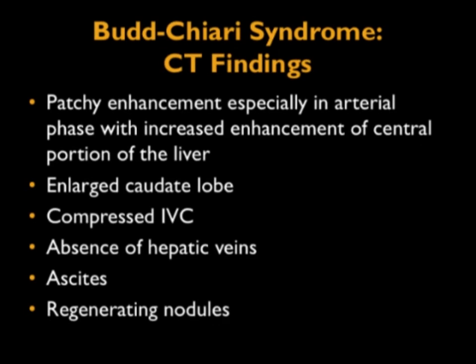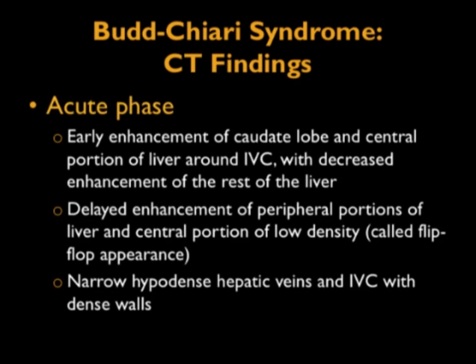In Budd-Chiari syndrome, CT findings include patchy enhancement especially in the arterial phase, with increased enhancement of the central portion of the liver — a flip-flop phenomenon. You can see a large caudate lobe, compressed IVC, absence of hepatic veins, ascites, and regenerating nodules. In the acute phase, you see early enhancement of the caudate lobe and central portion around the IVC with decreased enhancement of the rest of the liver — centrally bright, peripherally decreased — then delayed enhancement of the peripheral portions, while the central portion becomes low density. Narrowed, hypodense hepatic veins and IVC with dense walls can also be seen.